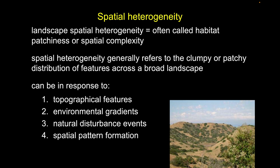When we talk about spatial heterogeneity, we can talk about a variety of types, but most of the time we're talking about landscape heterogeneity — and in particular, landscape spatial heterogeneity. We can call this landscape spatial heterogeneity, habitat patchiness, or spatial complexity — a whole host of terms that all refer to the same thing: the physical variation in structure as we move throughout space.